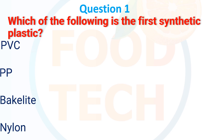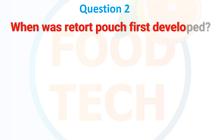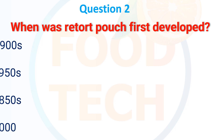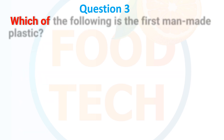A) PVC, B) PP, C) Bakelite, D) Nylon. The answer is C) Bakelite. When was the retort pouch first developed? A) 1900, B) 1950, C) 1850, D) 2000. The answer is B) 1950.